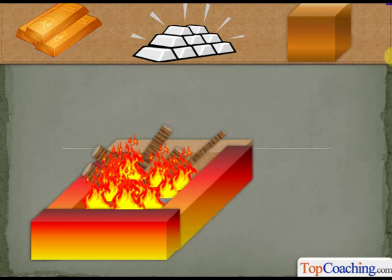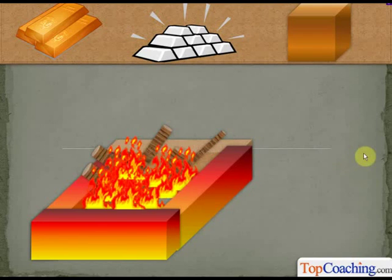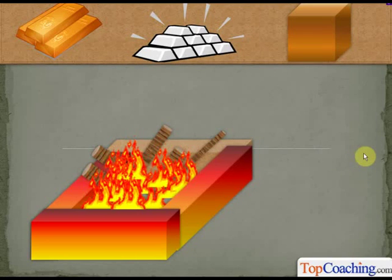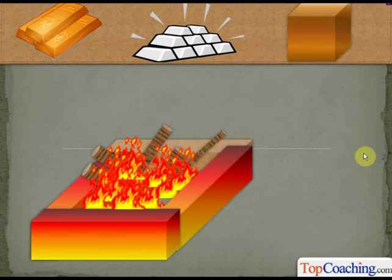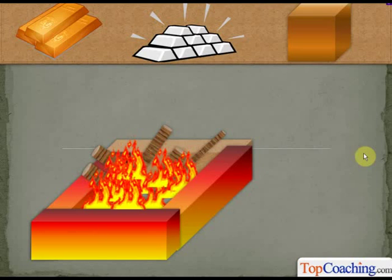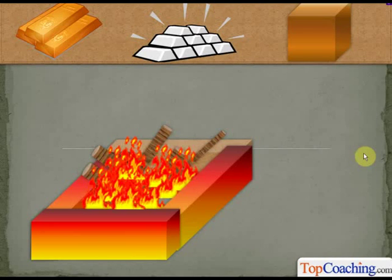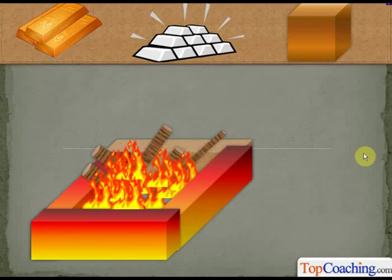Hi students! In the last chapter, we studied about the physical properties of metals. We studied, for example, that metals are lustrous, that they are hard and strong, that they conduct heat and electricity. We studied all these physical properties.